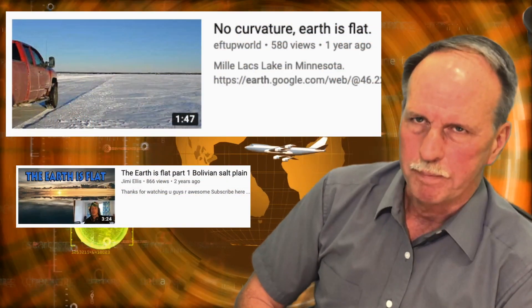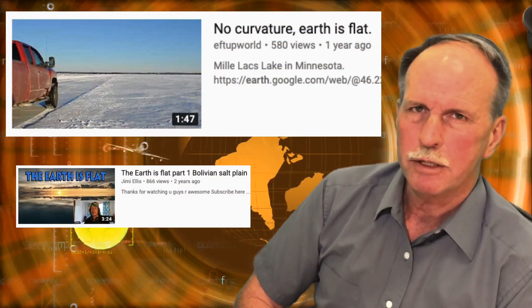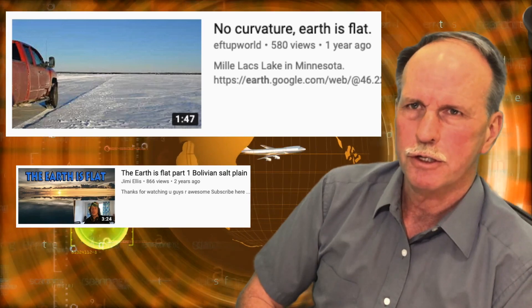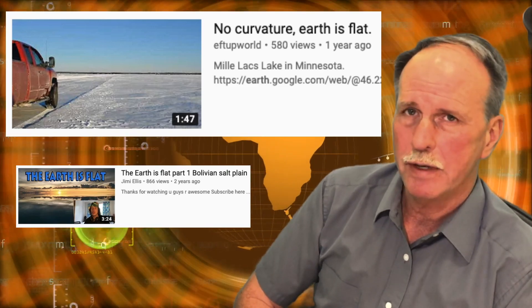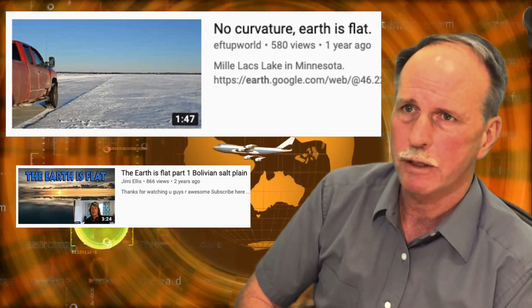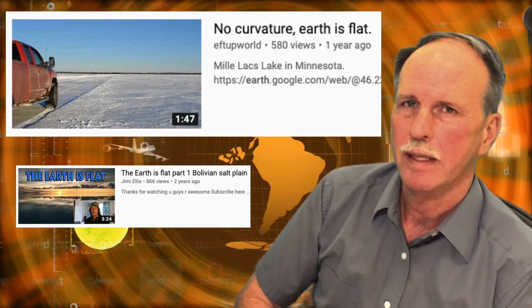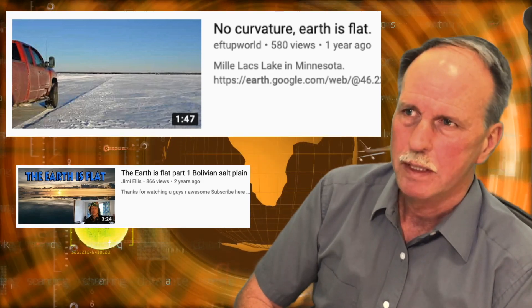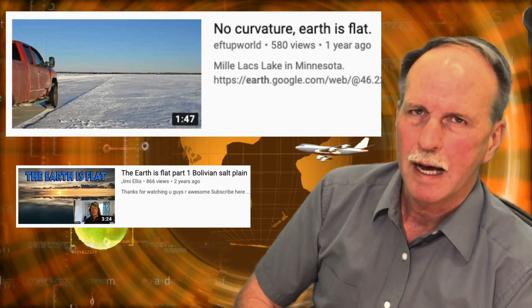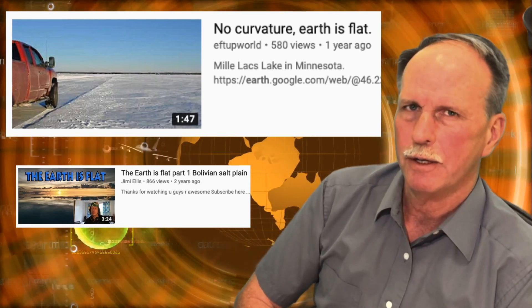Question number three. It seems the major way that the flat earthers try and claim that the Earth is flat is by showing the Earth is not curved. They want to falsify the globe. So tell me, how do you falsify the flat Earth?